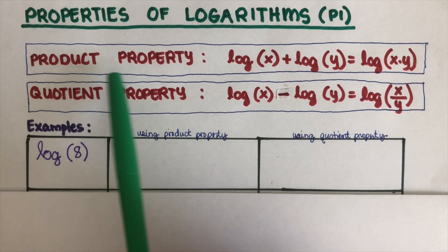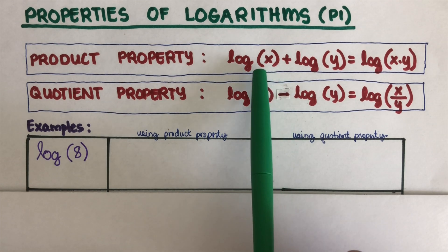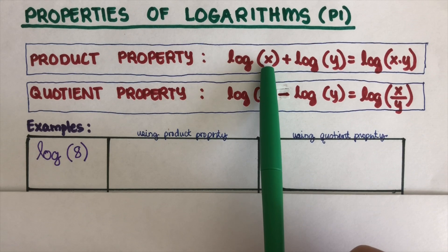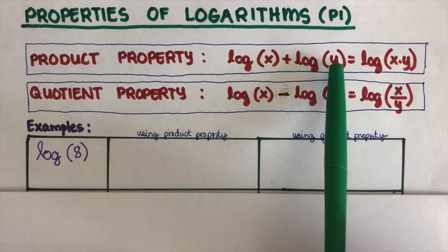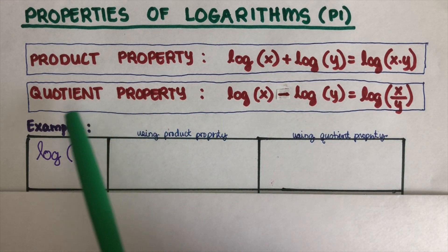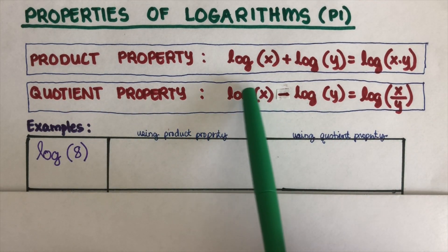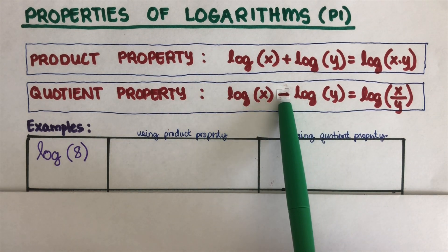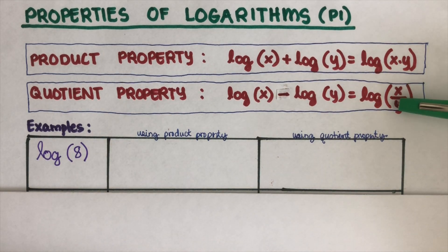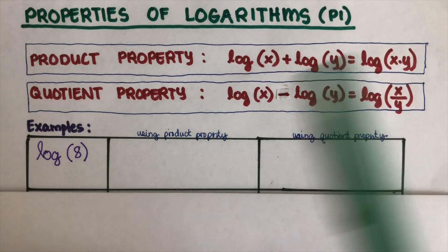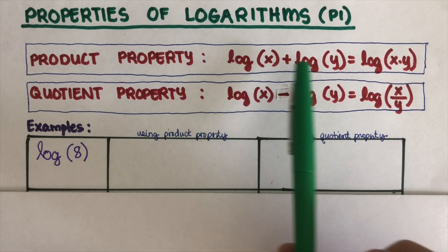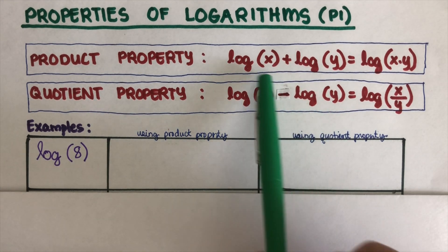The first property is the product property: whenever two logarithmic expressions are added, their arguments — the ones inside the parentheses — will be multiplied together. The quotient property is whenever two logarithmic expressions are subtracted, their arguments will be divided, so x divided by y. Just a reminder: both properties work only if the bases of both logarithms are the same.